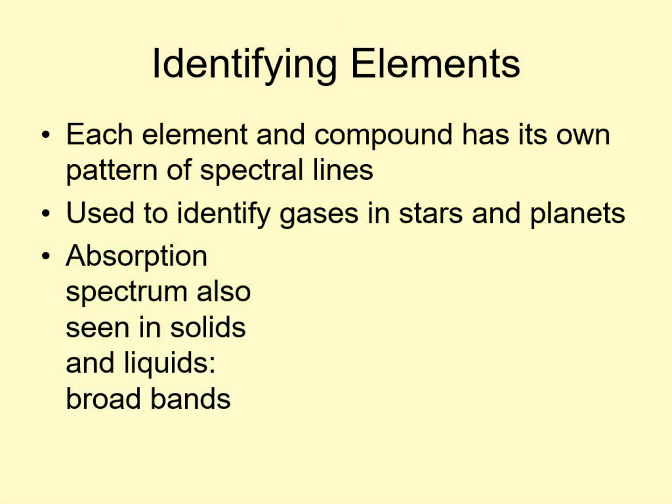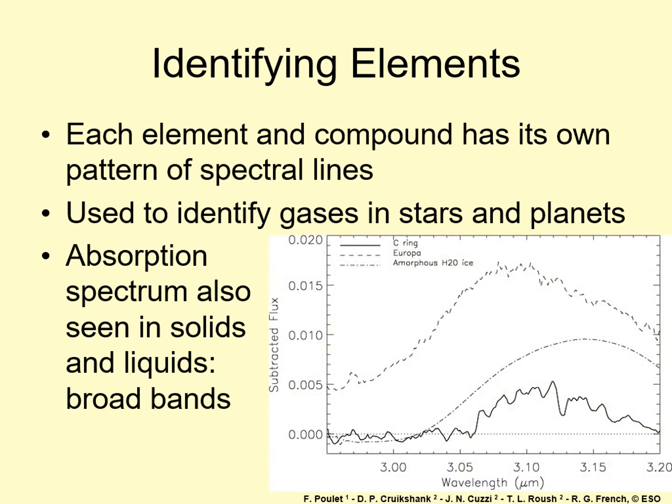I should mention that it's not just gases that produce absorption spectra. Solids and liquids do too, but they're harder to interpret. That's because they usually don't absorb discrete wavelengths of light. Instead, they tend to absorb whole bands of color. This means that many closely related materials will have spectra that look almost identical. So while it's easy to distinguish broadly different materials like ice and rock, it's much harder to figure out exactly what kind of rock or ice you might be looking at.